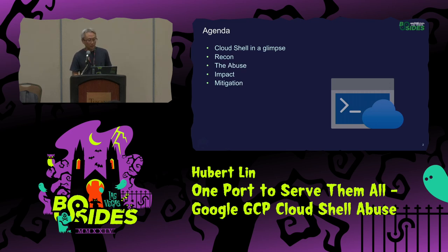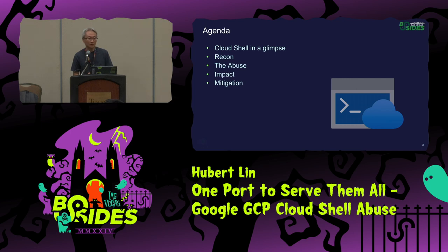Today's agenda is like this. First, we're going to talk about what's a quick glimpse of the Cloud Shell. And once we have the Cloud Shell initiated, we have a quick NMap scan about what we found during our discovery process. And finally, we'll talk about how we abused the findings through the open port we found, and what's the impact as well as the mitigation that could be countermeasured in the future.